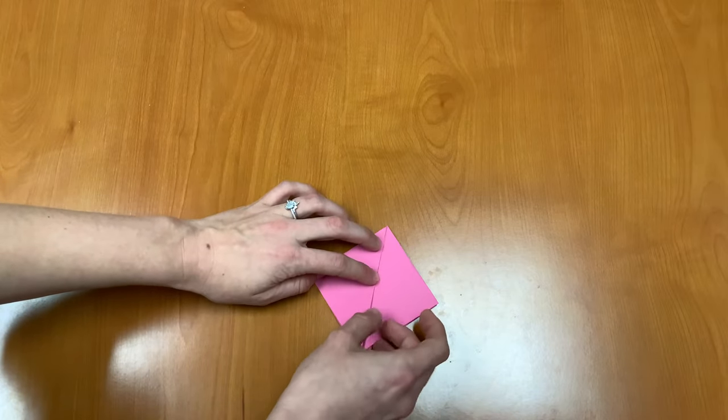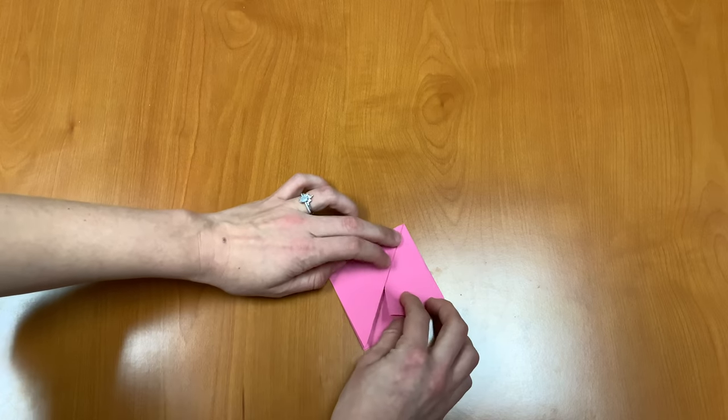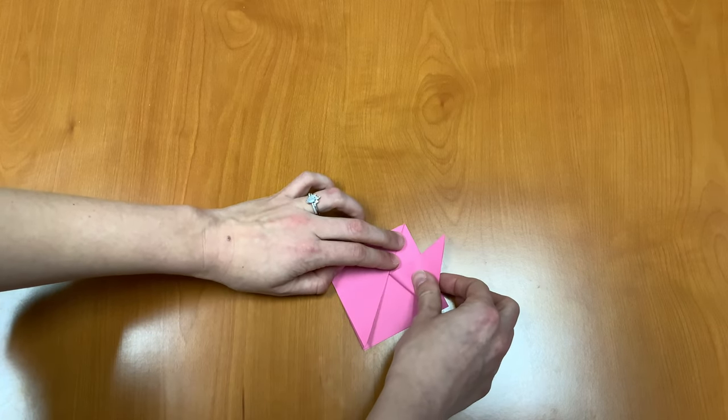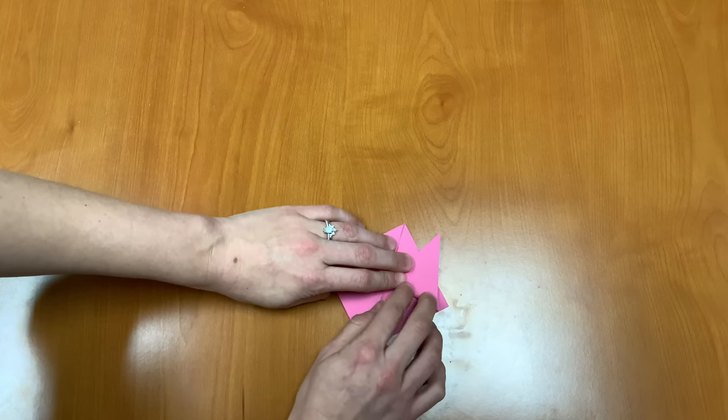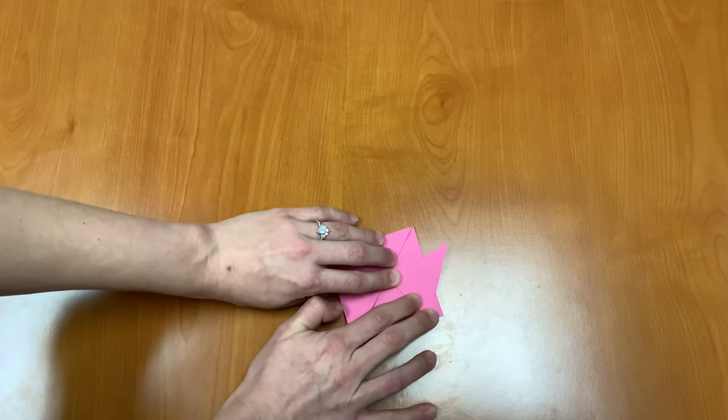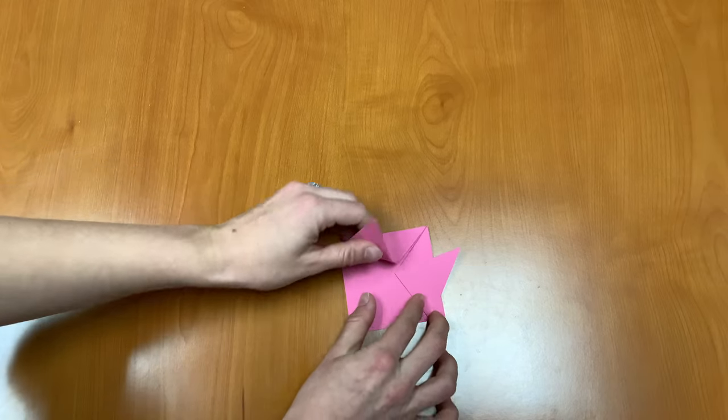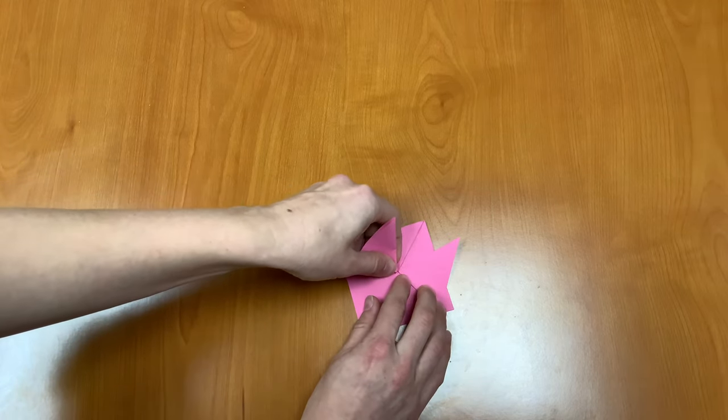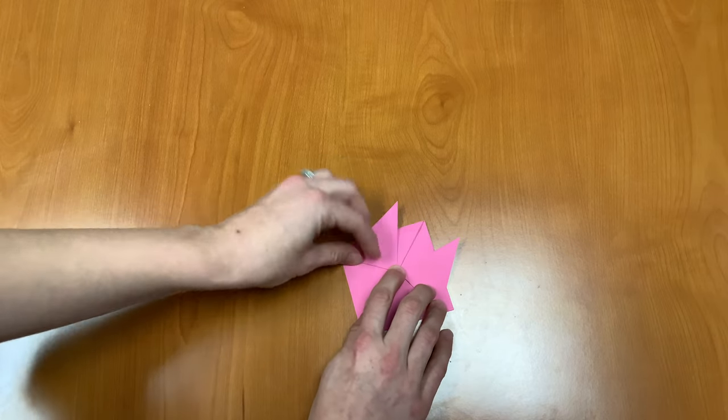Next we're going to take the right flap and fold it up just like this. We're going to take the left flap and fold it up the same way. Kind of at a small angle.